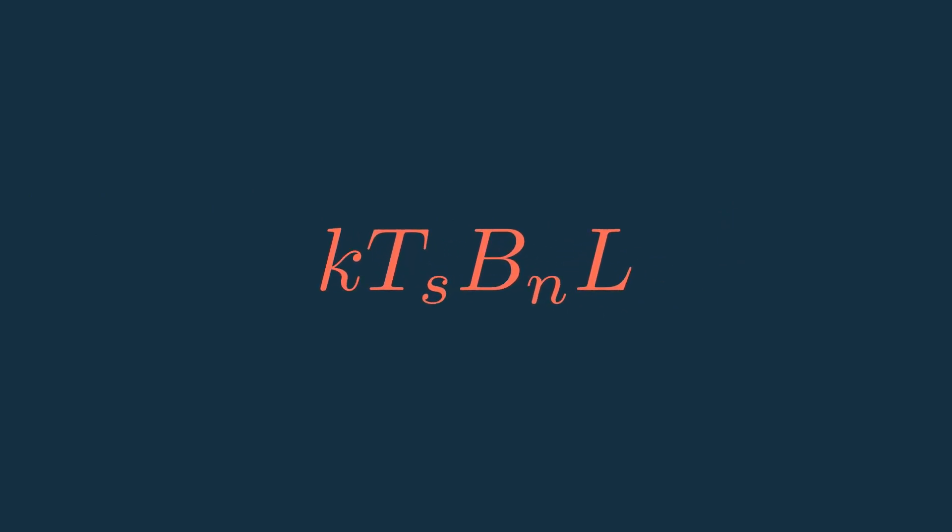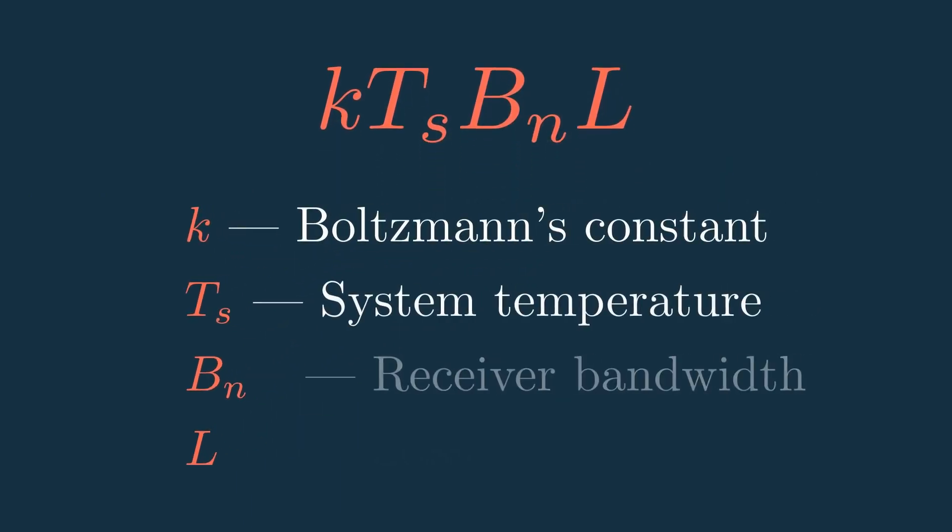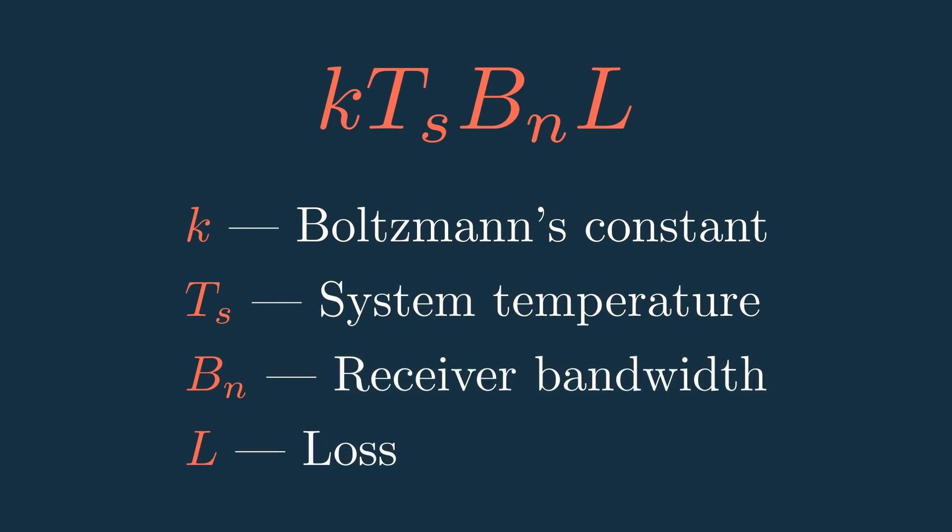Well, this is the equation where K is the Boltzmann's constant, T is the system temperature, B is the received bandwidth, and L is any extra losses before and in the receiver. It's a pretty simple equation, but it encompasses a lot, and it could definitely be a whole video on its own.